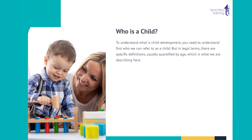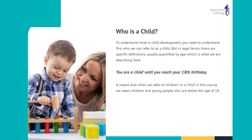Who is a child? To understand what child development is, you need to first understand who we can refer to as a child. In legal terms, there are specific definitions usually quantified by age. You are a child until you reach your 18th birthday. In this course, when we refer to children or a child, we mean children and young people who are below the age of 18.